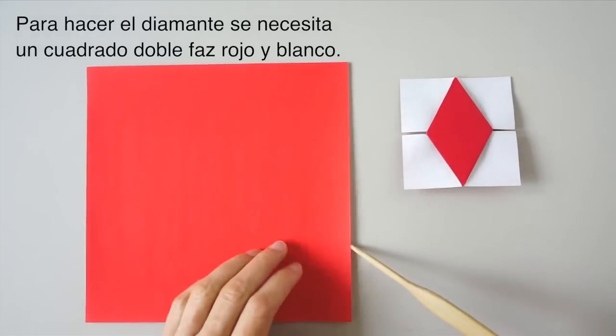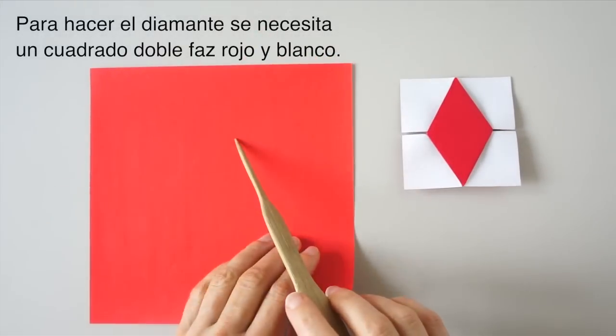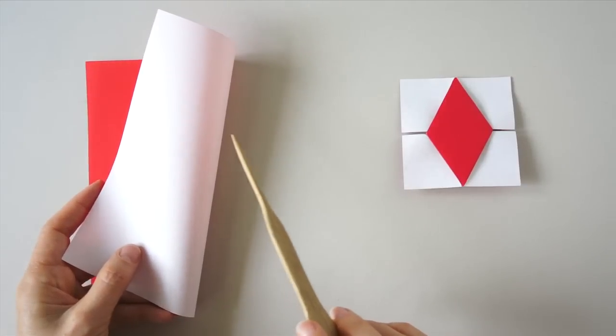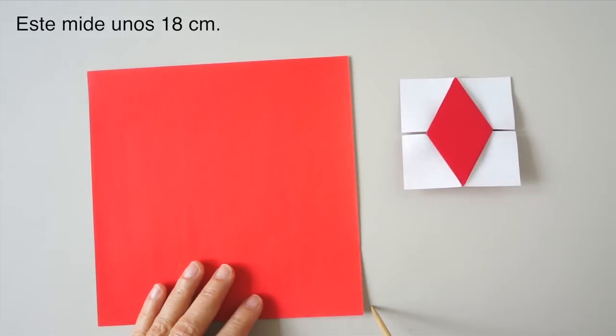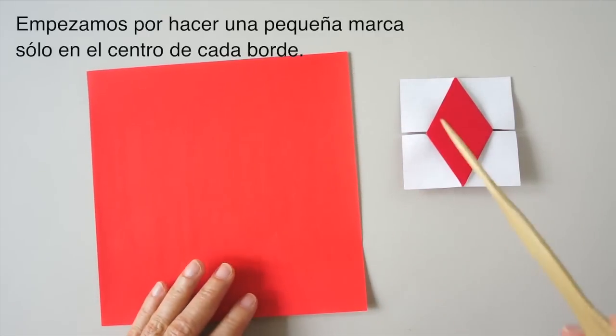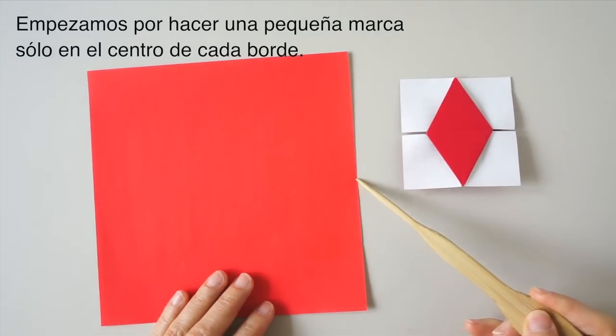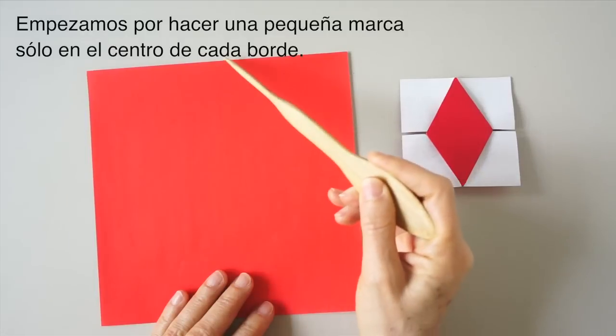To make this diamond, we need a piece of paper, dual color, red on one side, white on the other side, and I have here a 7 x 7 inch square. We are going to begin by marking the center on the edges.